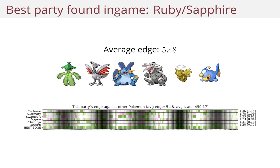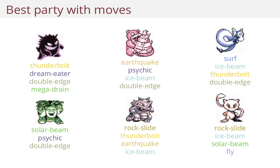You could extend the entire analysis to include moves. To do this, you would add several copies of each Pokemon and look at every combination of moves that it could have, and kind of extend the ideas that I've presented here.